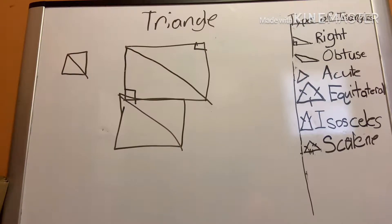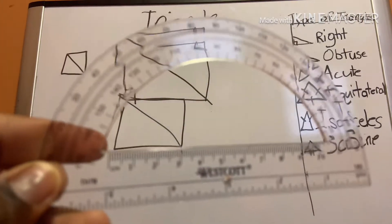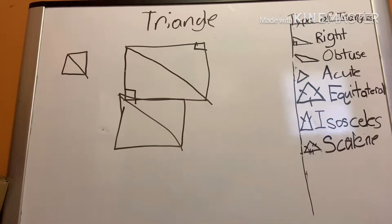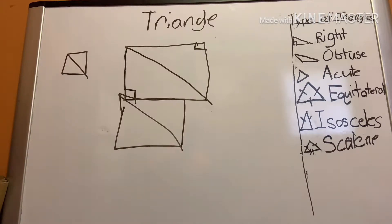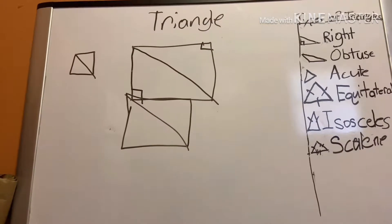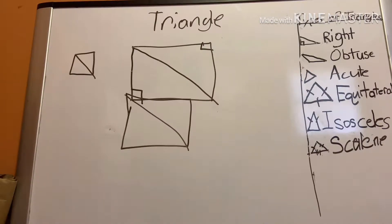I even got my protractor today. The protractor shows you which angle something is at. A protractor is a semicircle — it's half of a circle — and it is very useful for when you're trying to find the angle of something, like a triangle.